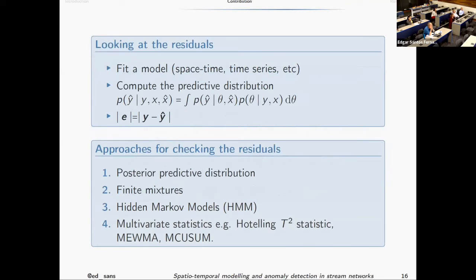How do we use the spatio-temporal model to detect anomalies? First, we take the data and feed it into the spatio-temporal model, learning about the regression coefficients and the spatial and temporal parameters. With those estimates, we make predictions from the model and compare them with the observed data. If the predicted value is very different from the real data, we assume there is an anomaly. So we compute an error or residual — comparing what is predicted to what is actually observed — and then do a lot of things with that.